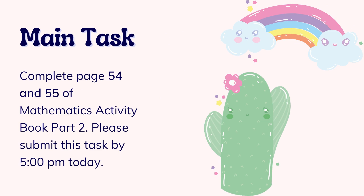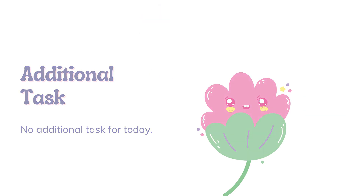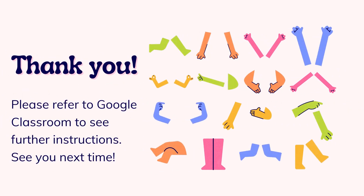Alright, that's all for today. For your main task, you need to complete page 54 and 55 of Mathematics Activity Book Part 2. Please submit this task by 5pm today. Take your pencil now and circle page 54 and 55. There is no additional task for today. Please refer to your Google Classroom to see further instructions. Thank you and see you next time. Goodbye!